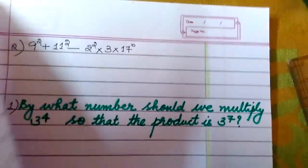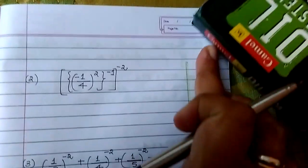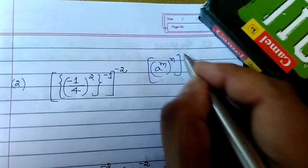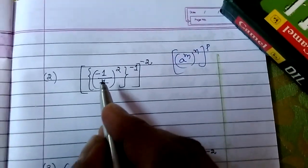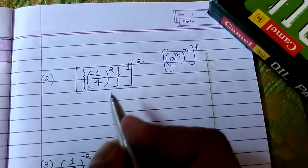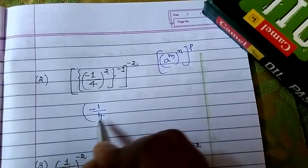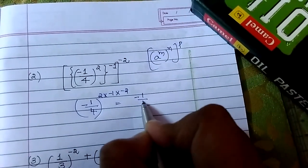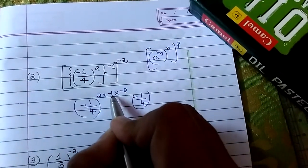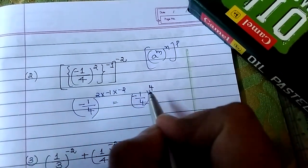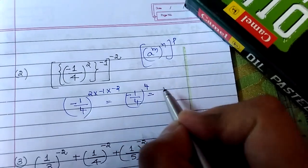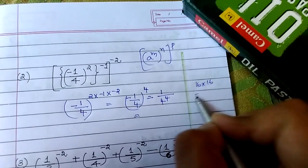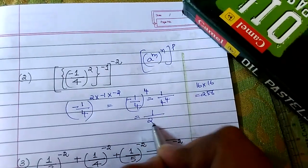Now next one uses the rule: a to the power m whole to the power n whole to the power p. Here it is minus 1 to the power square, so it is minus 1 by 4 to the power 2 into minus 1 into minus 2, which equals minus 1 by 4 to the power 2 into 2 into 4, giving power 4. Minus of minus is plus. So it is equal to 1 upon 4 to the power 4. 4 to the power 4 is 16 into 16, that is 256. So the answer is 1 by 256.